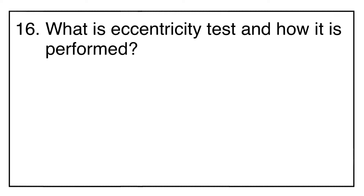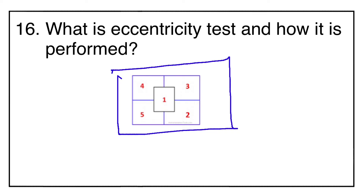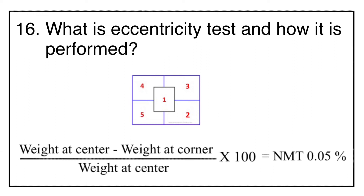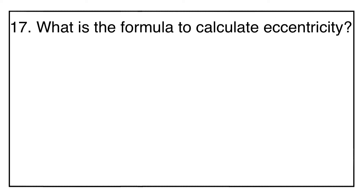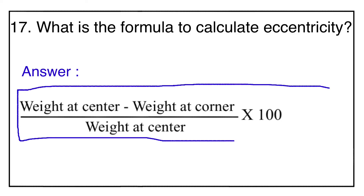Question number sixteen: what is the eccentricity test and how is it performed? In the eccentricity test, a test weight is measured at all corners of the balance pan and compared with the weight at the center position. For a rectangular pan, the first weight is measured at the center, then at each of the four corners. Eccentricity is calculated as: (weight at center − weight at individual corner) / weight at center × 100, and should not exceed 0.05%. Question number seventeen gives the same formula for eccentricity calculation.